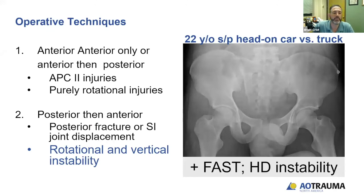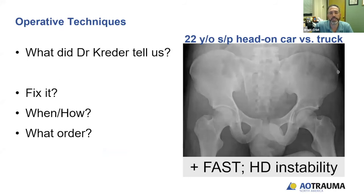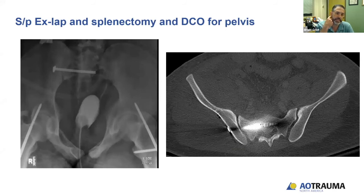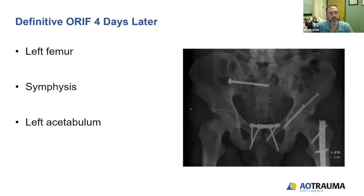For posterior then anterior — this applies when posterior fractures or SI joint displacement including vertical displacement are involved. This is a 22-year-old motor vehicle crash, car versus truck, with a positive FAST exam and hemodynamic instability. Dr. Rout discussed a resuscitation screw. This patient wasn't stable after exploratory laparotomy and splenectomy, so we placed an anterior external fixator and a posterior SI screw on the right side. Four days later, he went back for definitive fixation of remaining injuries, including a femur fracture.